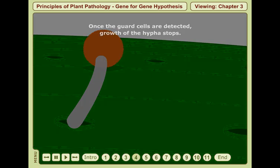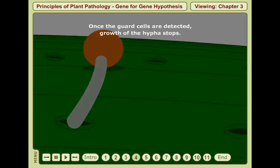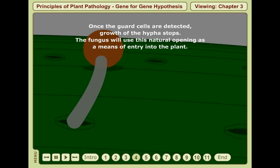Once the guard cells are detected, growth of the hypha stops and the fungus will use this natural opening as a means of entry into the plant.